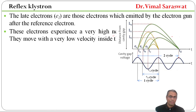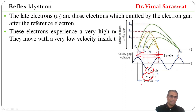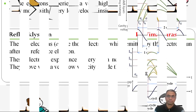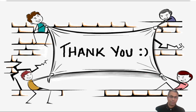This was the diagram for the bunching process, showing half cycle, 3/4 cycle, 1 cycle, and 2 cycles. Here we end our session. In the current session we have discussed about reflex klystron. Goodbye.